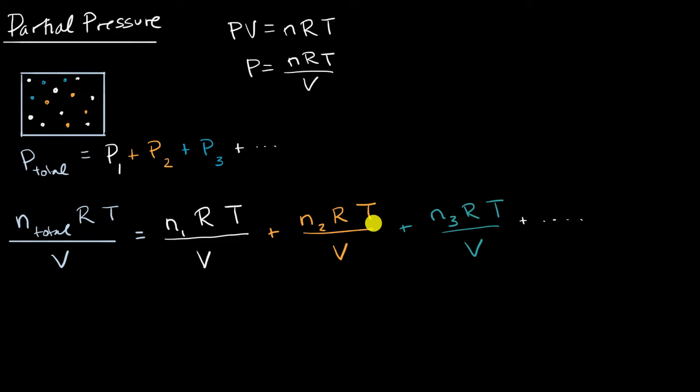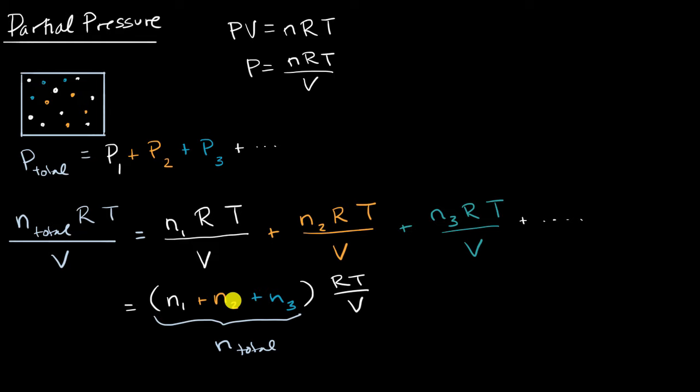When you look at it mathematically, you can see that on the right-hand side we can factor out RT over V. If you do that, you get (N₁ + N₂ + N₃) times RT over V. And this right here is the exact same thing as our total number of moles — the number of moles of gas one plus gas two plus gas three gives you the total number of moles in the container. So this makes sense both mathematically and logically.